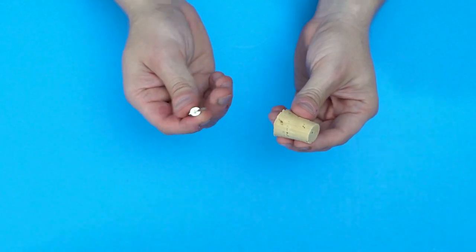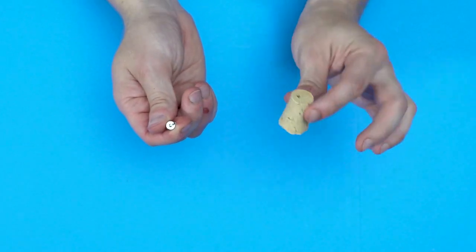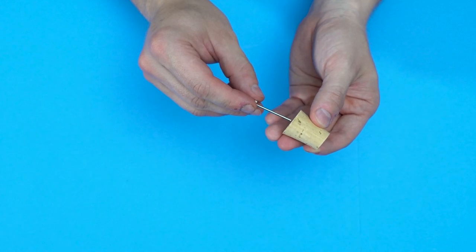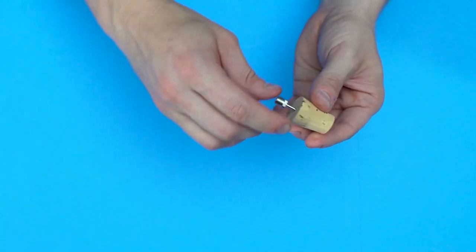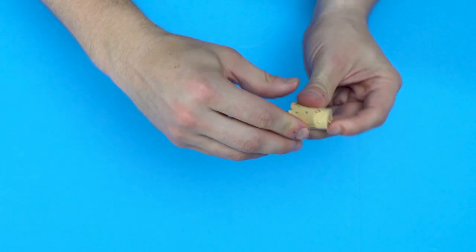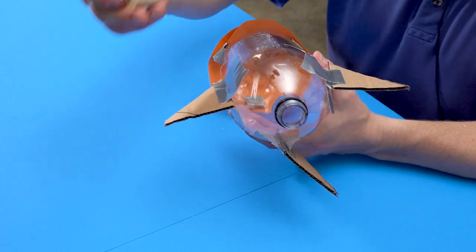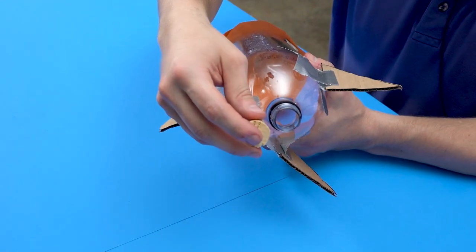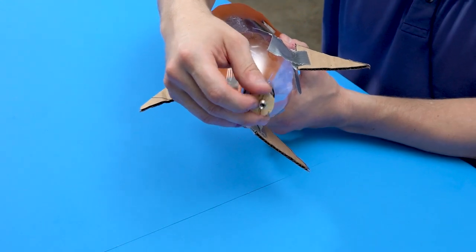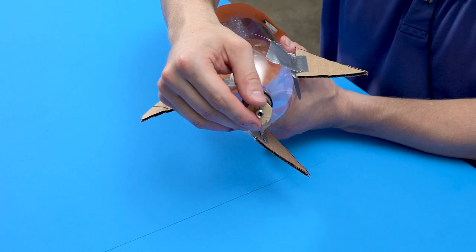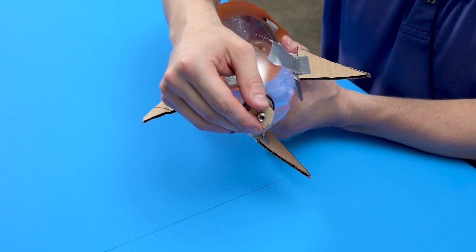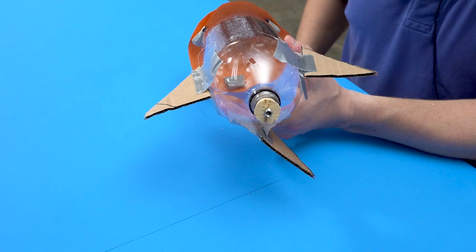So now it's time to take a standard inflating needle and a piece of cork, and I'm going to push the needle straight through the cork to the other side. And so when it comes time to launch, the cork with the needle will fit into the bottle like this after we add water and after we add air.